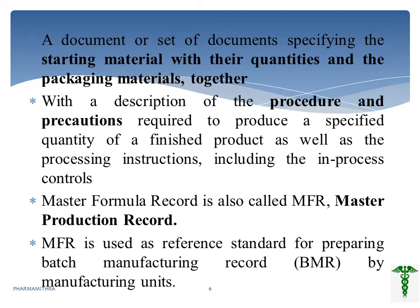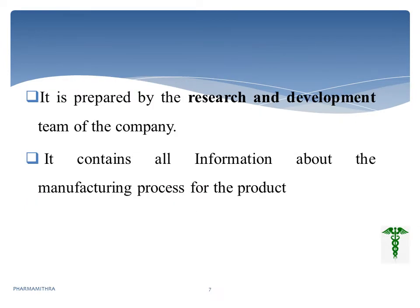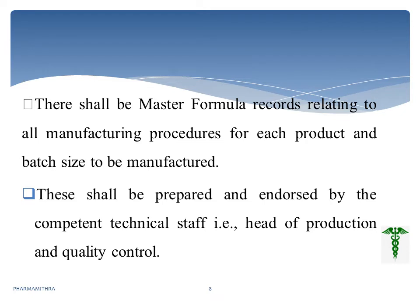We can say that the MFR is a document specifying the details starting from the starting material, including the quantity, packaging material, procedure, and precautions. The Master Formula Record can also be called the Master Production Record. It is prepared by the R&D team and contains information about the product as well as the batch size. It is prepared by competent technical staff — normally the head of production and quality control prepares the MFR.